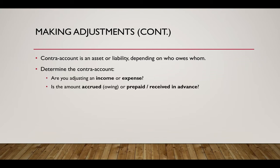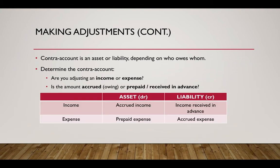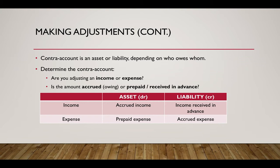In order to identify what you're actually going to call this contra account, ask yourself two simple questions. Firstly, are you adjusting an income or an expense account? And secondly, is the amount accrued — in other words, still owing — or has it already been paid? From this, you can determine whether you are looking at an accrued income, for example if it's an income that is still owing, which is an asset account, or maybe a prepaid expense, also an asset account, because in both cases money is owed to the business. Alternatively, if you have an income that has been received before it was actually due to you, you owe them and it's a liability — just like if you have an expense that you have not yet paid, which would also be a liability account.